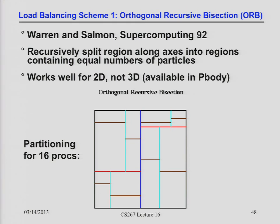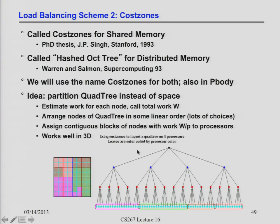So researchers looked at the tree itself for a different approach. The second scheme is called cost zones, introduced in 1993. It was used in a shared-memory version and also called a hashed oct-tree for the distributed-memory version. We'll use the name cost zones for both.